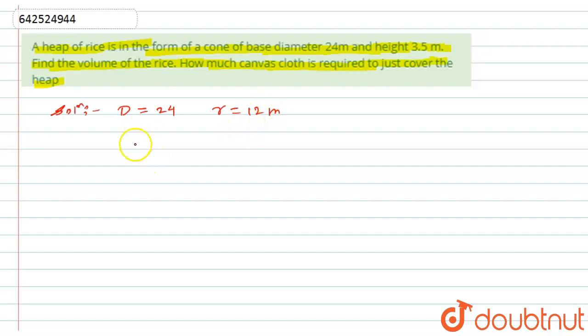Now first we have to find the volume of the rice which is in the form of cone. So volume of the cone will be equal to 1/3 π r² h. Now simply I will put the values over here.